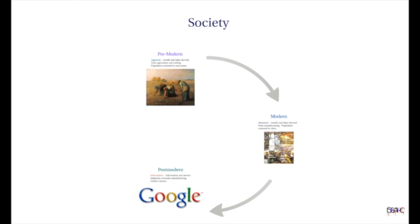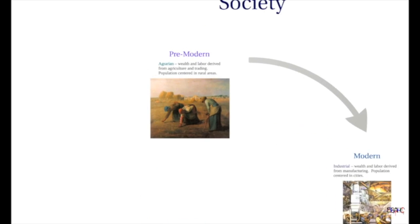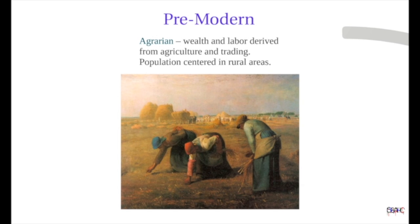Using a very broad brush, let's identify some aspects of the pre-modern, modern, and postmodern periods. In the pre-modern era, the primary economic driver was agriculture, so most people lived in rural areas.